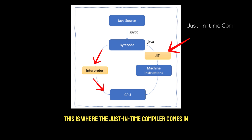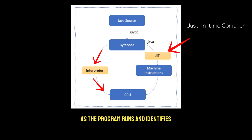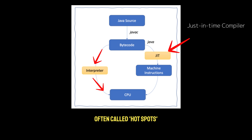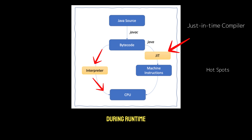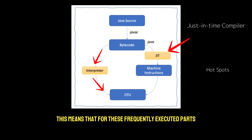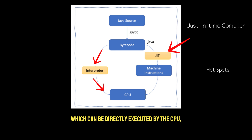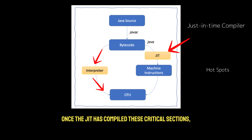This is where the Just-in-Time compiler comes in. The JIT compiler analyzes the bytecode as the program runs and identifies sections of code that are frequently executed, often called hotspots. Instead of interpreting these hotspots repeatedly, the JIT compiler compiles them into native machine code during runtime. This means that for these frequently executed parts, the JIT compiler turns the bytecode into optimized machine code, which can be directly executed by the CPU, bypassing the need for further interpretation.